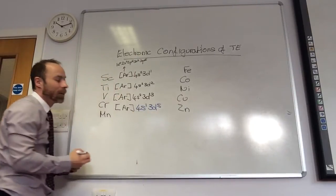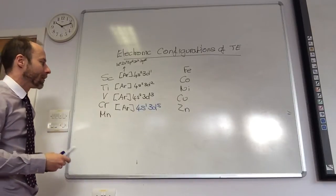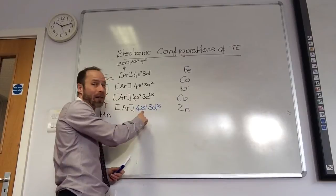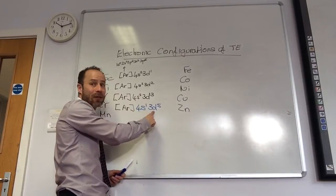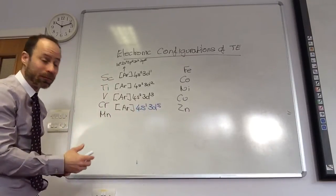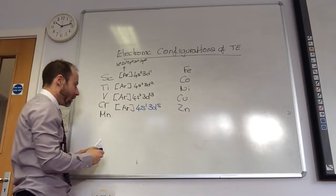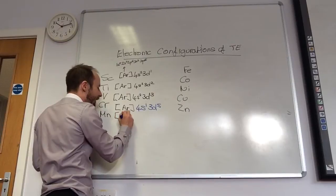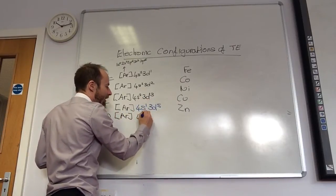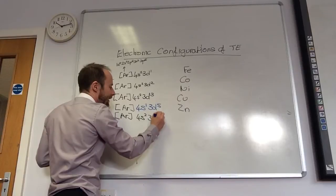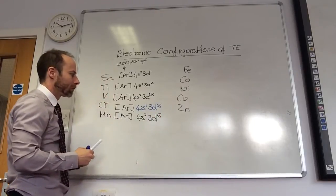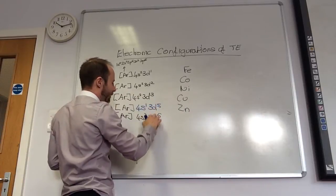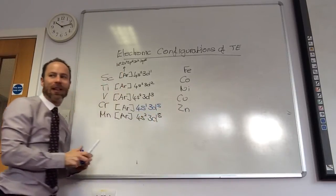Chromium is actually 4S1, 3D5 — meaning both the 4S and the 3D are half-filled. Half-filled subshells are stable. The next element, manganese, goes back to the regular pattern: 4S2, 3D5, and then iron is 4S2, 3D6 — it gains an extra electron going back to that pattern.